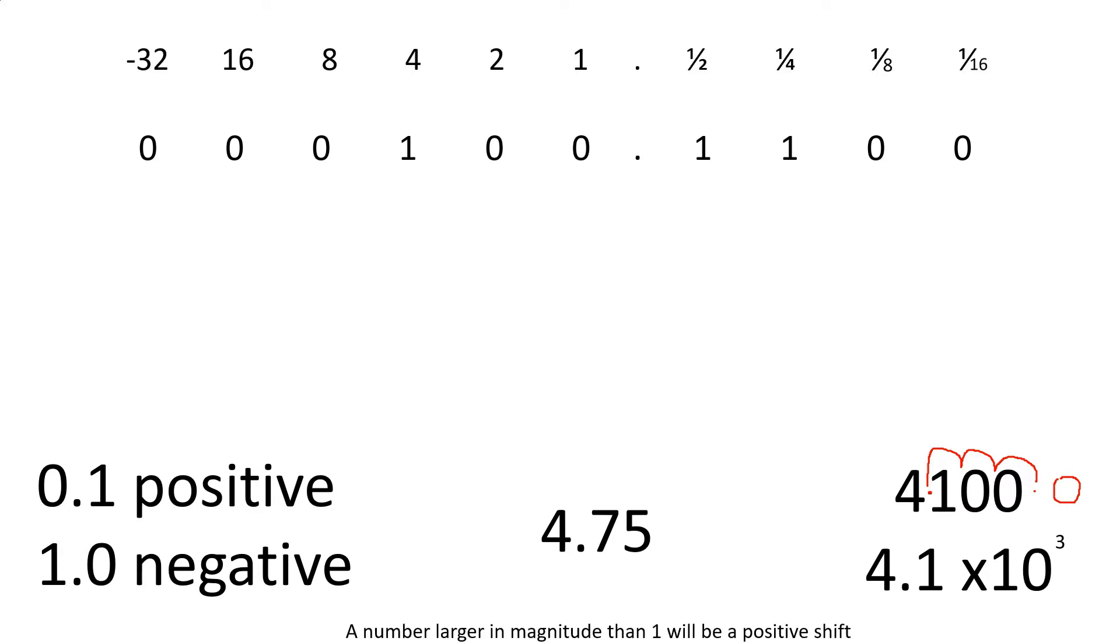On our original example we had 4.1 times 10 to the 3. As our number is 4100, which is larger than 1, it's a positive shift. If our number had been 0.025, and we'd shift that along to be 1.25 times 10 to the minus 2, it would have been a negative shift if the number is smaller in magnitude than 1.